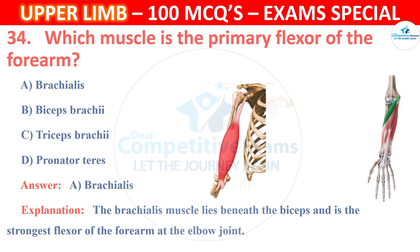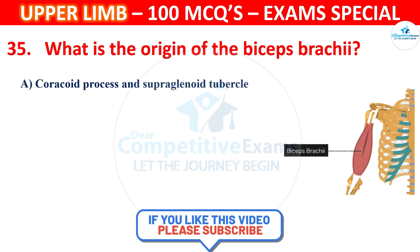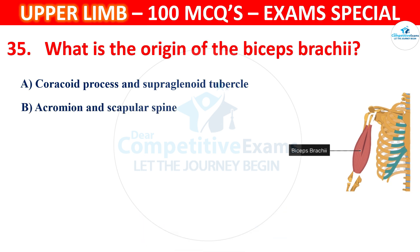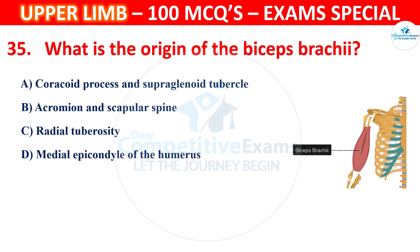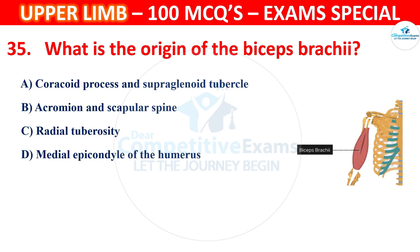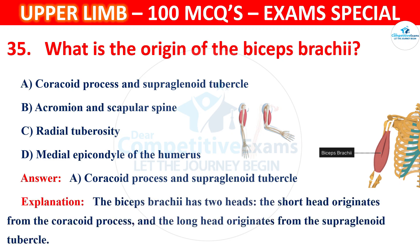Question number 35: What is the origin of the biceps brachii? Options: coracoid process and supraglenoid tubercle, acromion and scapular spine, radial tuberosity, or medial epicondyle of the humerus. The correct answer is A, coracoid process and supraglenoid tubercle. The biceps brachii has two heads: the short head from the coracoid process and the long head from the supraglenoid tubercle.